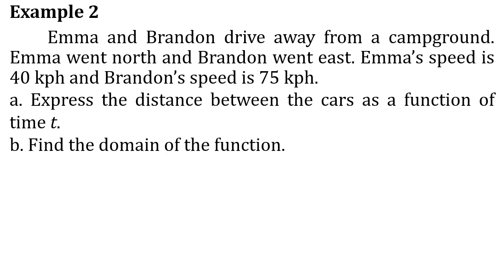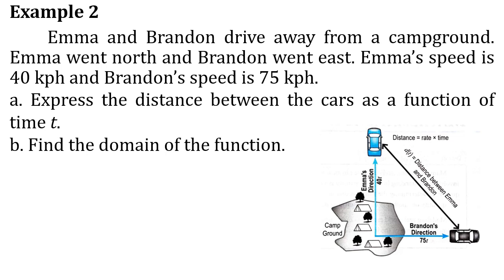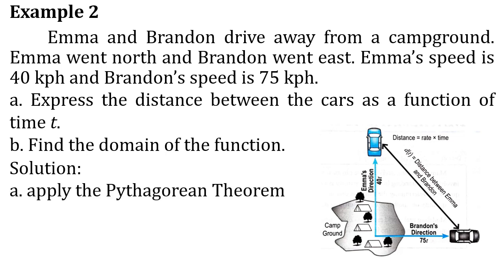For example number two, Emma and Brandon drive away from a campground — Emma went north and Brandon went east. Emma's speed is 40 kilometers per hour and Brandon's speed is 75 kilometers per hour. Letter A: express the distance between the cars as a function of time T. Letter B: find the domain of the function. We will illustrate this problem — the campground is the origin, Emma goes north, Brandon goes east, forming a right triangle. We can apply the Pythagorean theorem to find the distance between them.